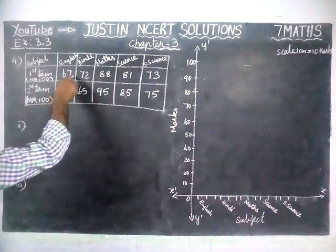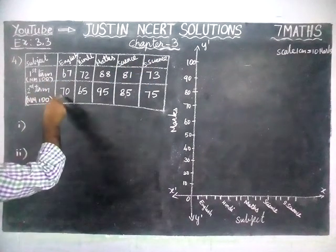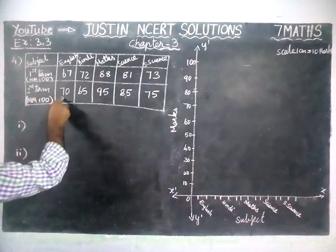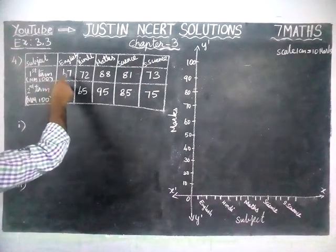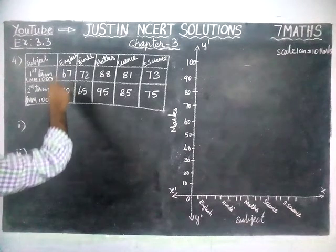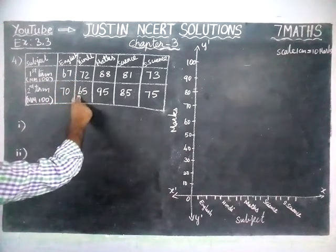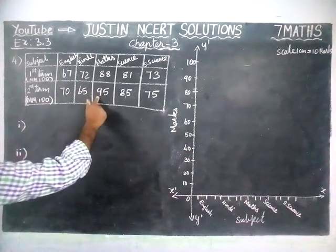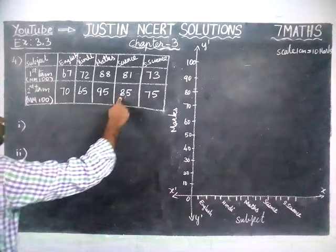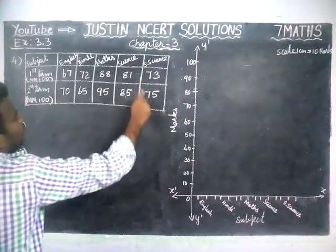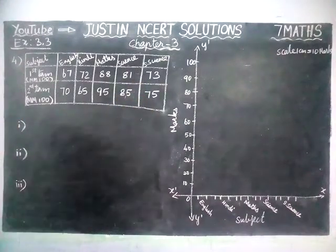This is first term marks and this is second term marks. First term: 67, 70, 72, 65, 88, 95, 81, 85, 73 and 75.